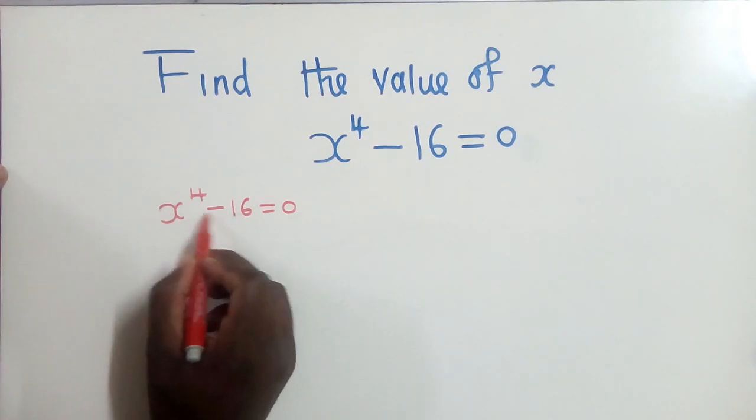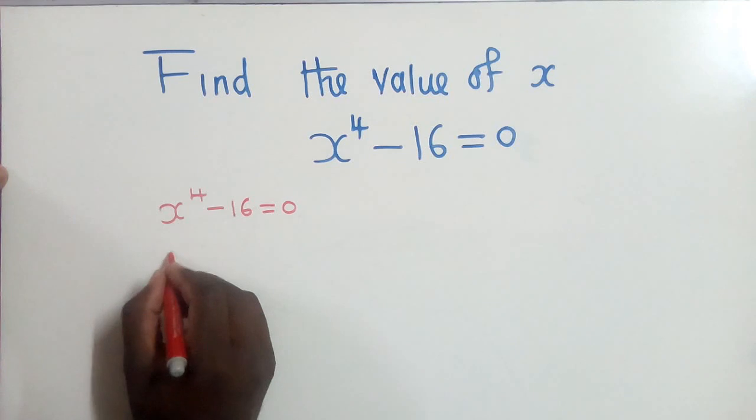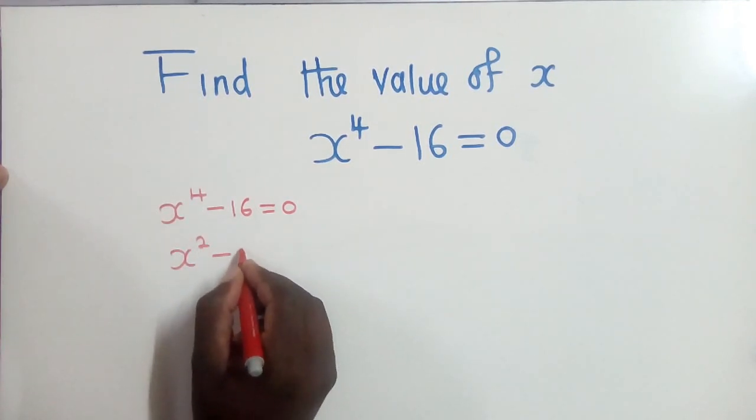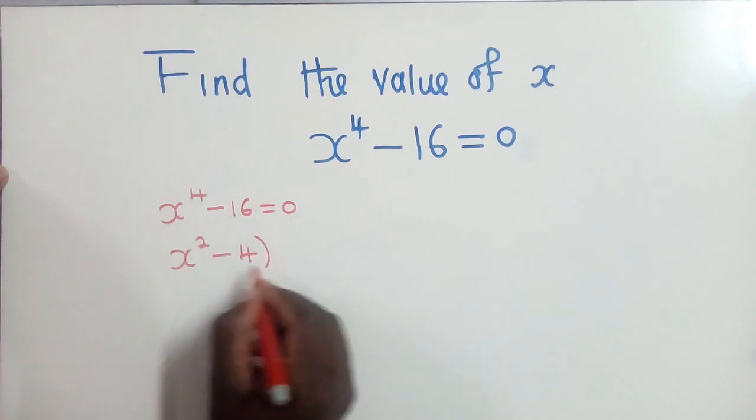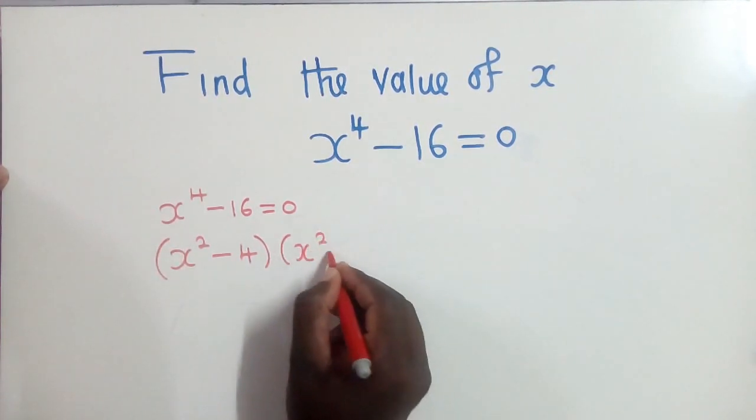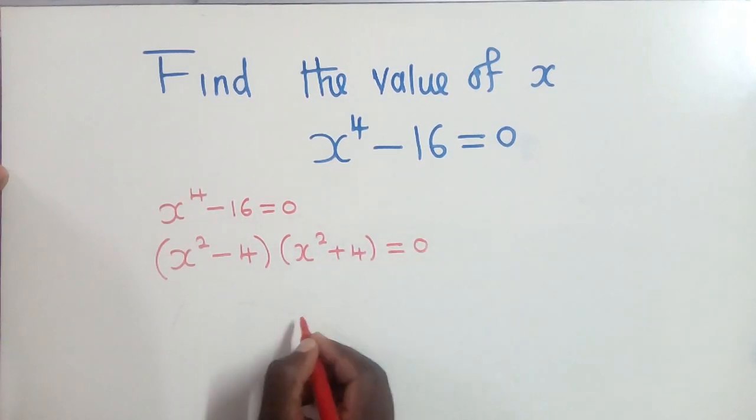If you can see nicely here, we are going to use the difference of two squares. So it's supposed to be (x^2 - 4) and here (x^2 + 4) equals 0.